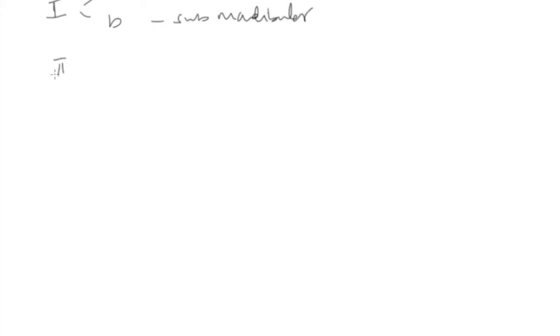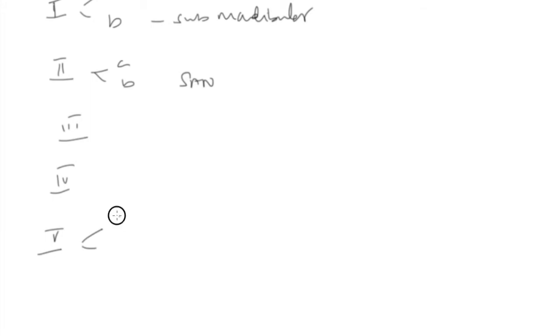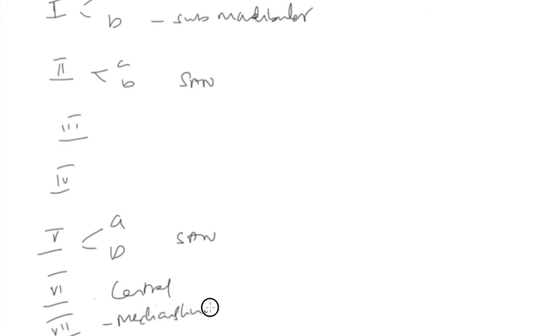Quick revision: Level 1A is the submental group; 1B is the submandibular group. Level 2 is divided into 2A and 2B by the spinal accessory nerve. Level 3 is from the hyoid to the cricoid. Level 4 is from the cricoid to the suprasternal notch. Level 5 is the posterior triangle nodes, divided into 5A and 5B by the spinal accessory nerve. Level 6 is the central group from the hyoid to the suprasternal notch. Level 7 is the mediastinal nodes.